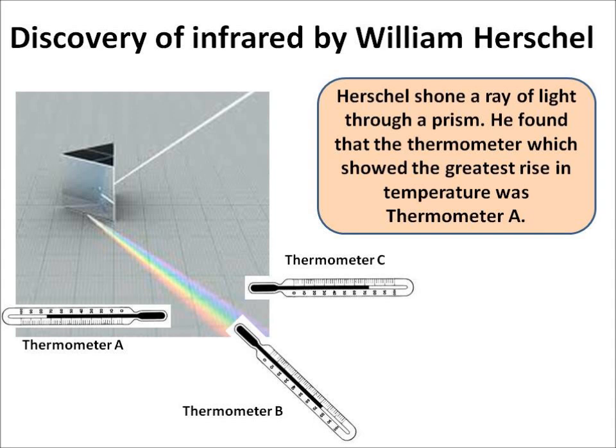He noticed that thermometer A's temperature went up the most, even though it wasn't actually in the path of any of the light coming out of the prism. From that, Herschel deduced that there must be some invisible radiation which he couldn't see, which was causing thermometer A's temperature to go up. And that invisible radiation was infrared.